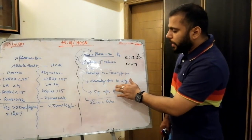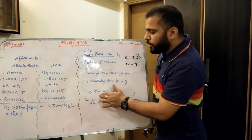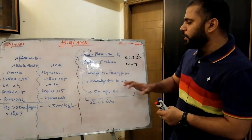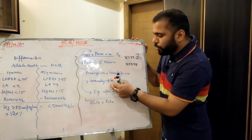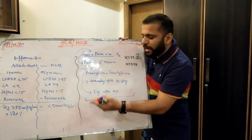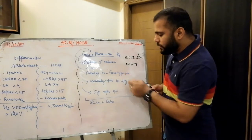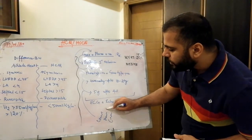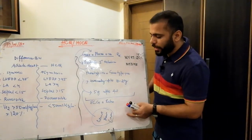For first-degree relatives who are genotype-positive but phenotype-negative: evaluate annually with ECG and echo up to age 18–20 years. If they are older than 20 years, evaluate every 5 years. For relatives who are both genotype-negative and phenotype-negative, no further follow-up is needed — they can live their normal lives.